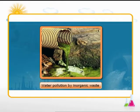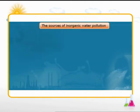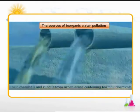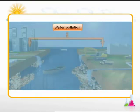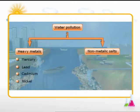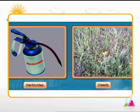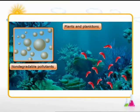Let us learn about water pollution by inorganic waste. Inorganic waste is waste consisting of material other than plant or animal matter. The sources of inorganic water pollution are toxic chemicals and runoffs from urban areas containing harmful chemicals, pesticides and household chemicals, industrial discharge and spillages. Water is also polluted by heavy metals such as mercury, lead, cadmium and nickel, non-metallic salts such as selenium and arsenic, and byproducts of industrial processes such as acids.